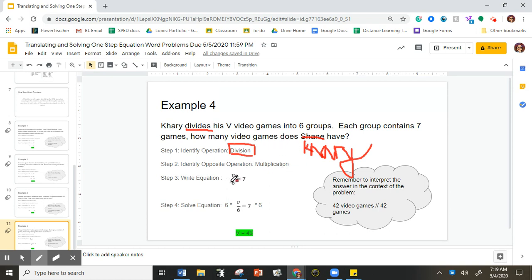I'm going to write the equation out, which is V divided by 6, because I know it's divided, into six groups equals 7. So there's seven games in each group. Now what I'm doing is I'm doing this multiplication on both sides. I'm going to multiply by six on both sides, and then I get 42. So we always have to remember to interpret this in the context of the problem, which is 42 video games.